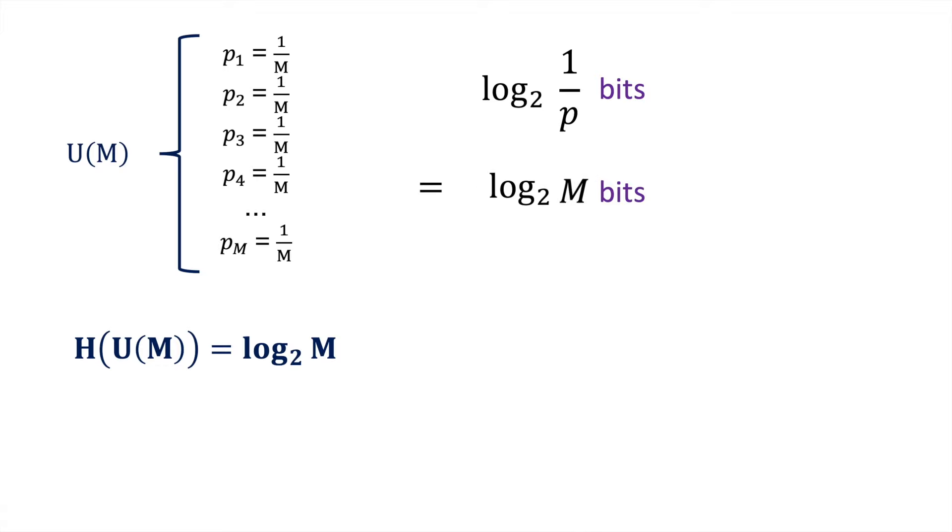For an arbitrary probability distribution where the probabilities vary, we can say that if an outcome has probability of pi, then this many bits are needed to encode that outcome. And we can calculate the expected number of bits over all the outcomes by multiplying the expression by each probability and summing over all possible events. This leads to an expression which may look familiar, as this is the Shannon entropy formula.